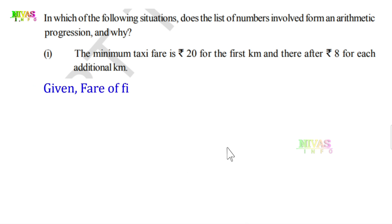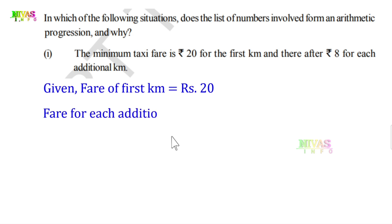Given: fare of the first kilometer is 20 rupees. For the second kilometer, the minimum charge will also be fixed. This fixed number added each time is what we call common difference — a fixed value that defines arithmetic progression.